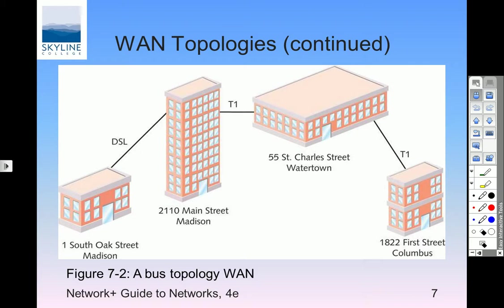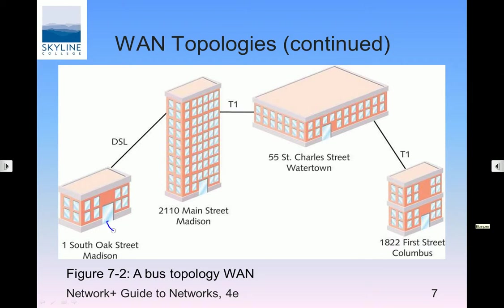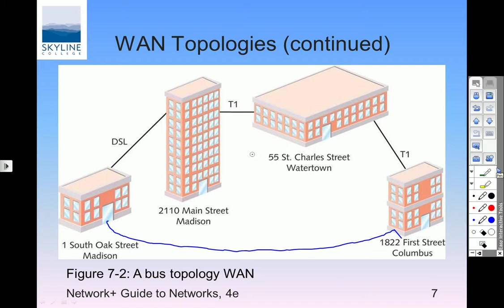A ring gives you some redundancy — if it doesn't work in one direction, it might work in the other direction. A counter-rotating ring is a good thing: two rings, one going in each direction, gives you that redundancy. It's practical for a few locations. If we bring this thing around, now we've got a ring.